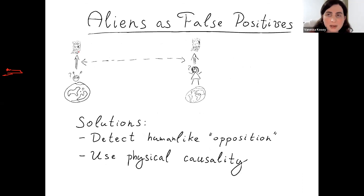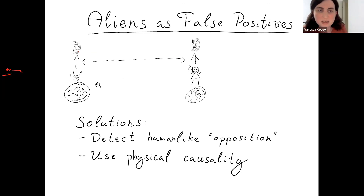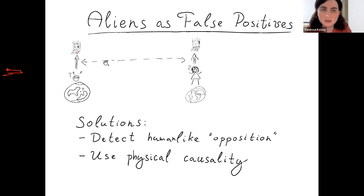One problem that does come up is what if aliens show up as a false positive in the causal attack detector? If aliens are thinking about building their own AI, and that's logically correlated with humans thinking about building theirs, then aliens deciding not to build their AI would logically cause our AI not to get built — making the aliens precursors in the logical correlation sense. Then the hypothesis gets filtered out even though it's actually true. I have some proposed solutions: one is something I'm calling the 'tech-human-like opposition,' and another is trying to use physical causality instead of logical causality, or hoping that this logical correlation isn't actually sufficiently strong in practice.